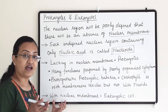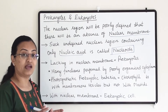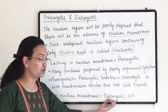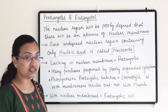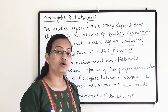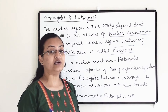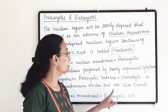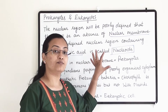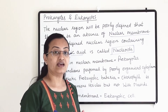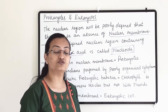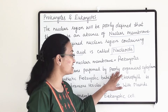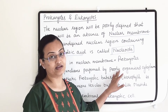Cells which have a nuclear membrane and a well-defined nuclear region are known as eukaryotic cells. Advanced cell structure with all the important organelles and well-defined activities can be seen in eukaryotic cells. Whereas prokaryotic cells have a primitive cell structure and their cytoplasm is responsible for all activities, though that cytoplasm is poorly organized.